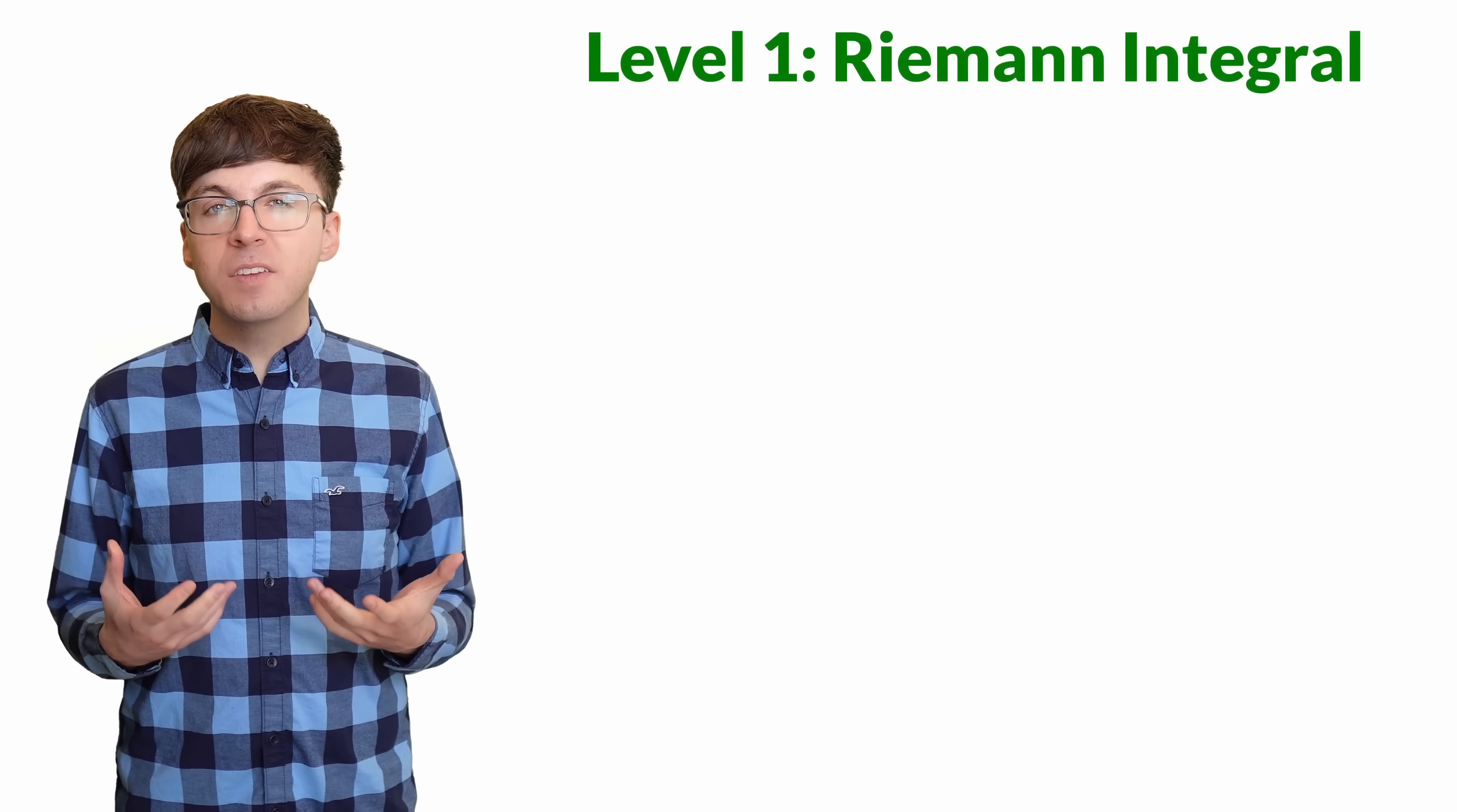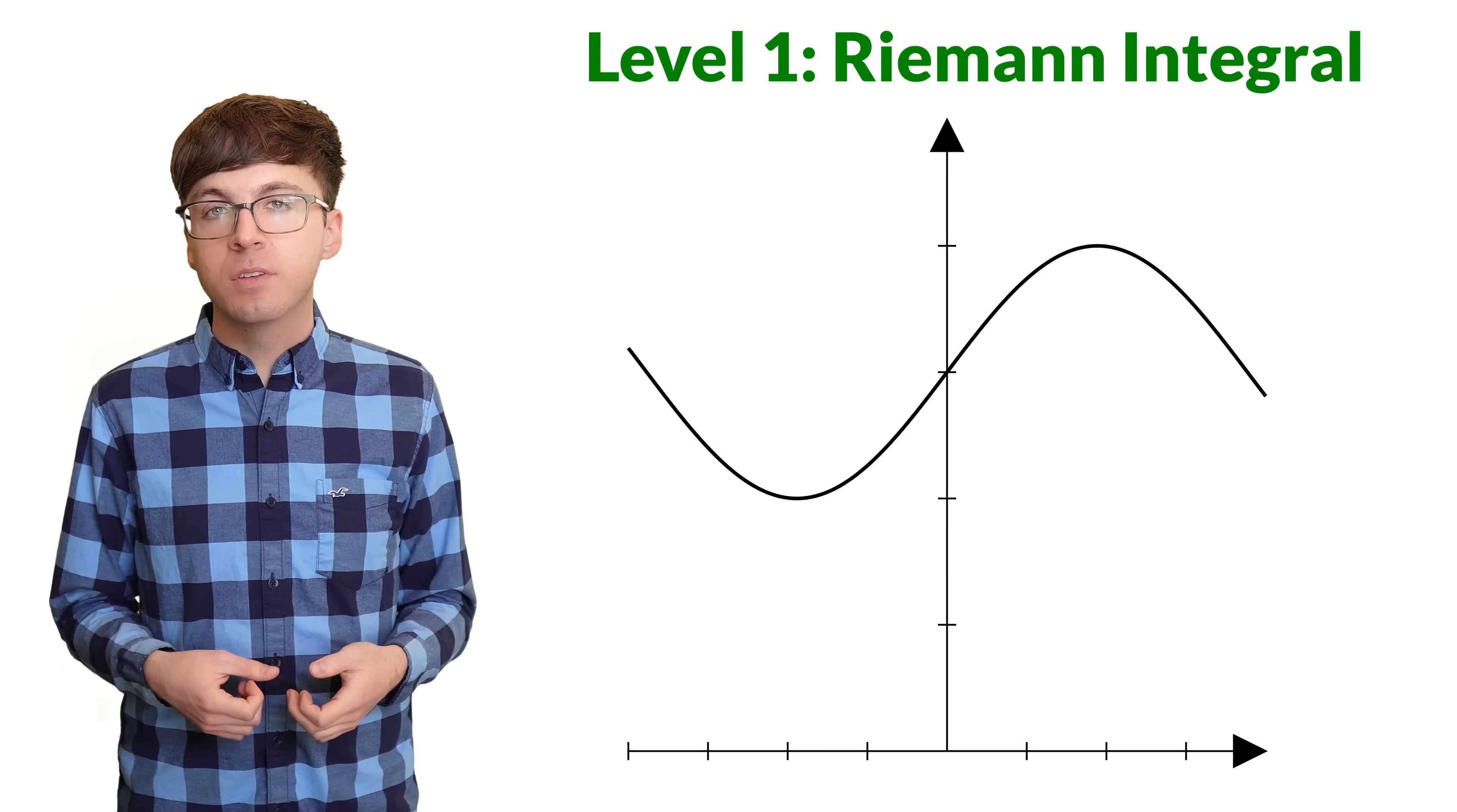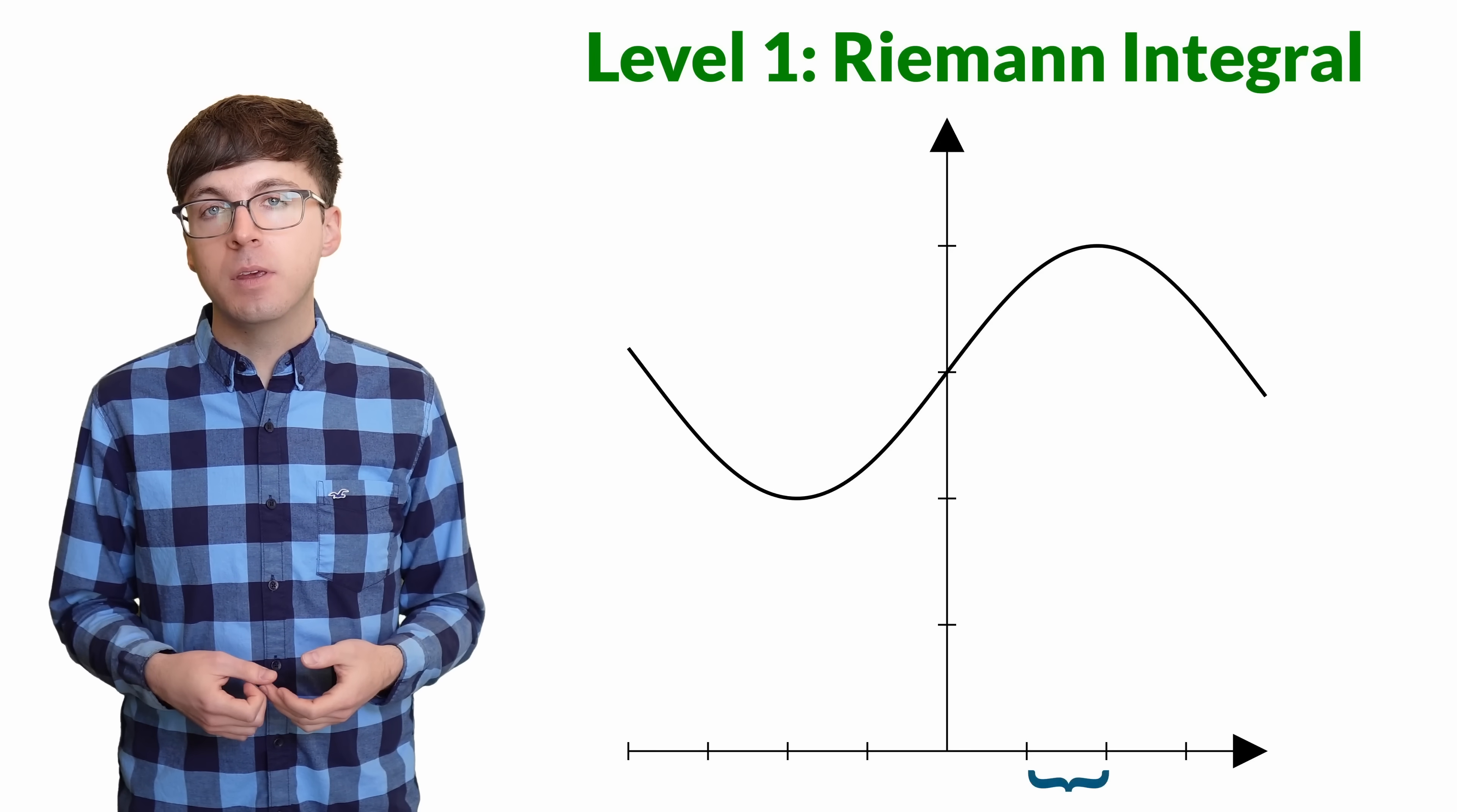For level one, let's look at the Riemann integral. We start by estimating the area under the curve with rectangles. We can pick any widths we want. The endpoints of the rectangle form a partition of the interval A,B.